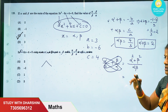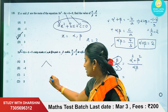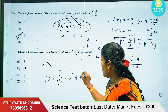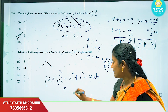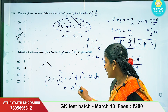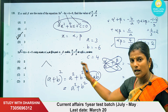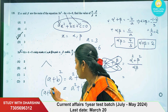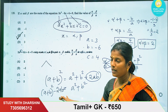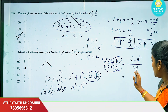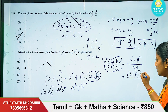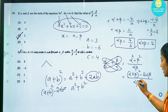We use the identity: a squared plus b squared equals (a plus b) squared minus 2ab. So alpha squared plus beta squared equals (alpha plus beta) squared minus 2 times (alpha times beta). The full expression becomes: [(alpha plus beta) squared minus 2(alpha times beta)] divided by (alpha times beta).